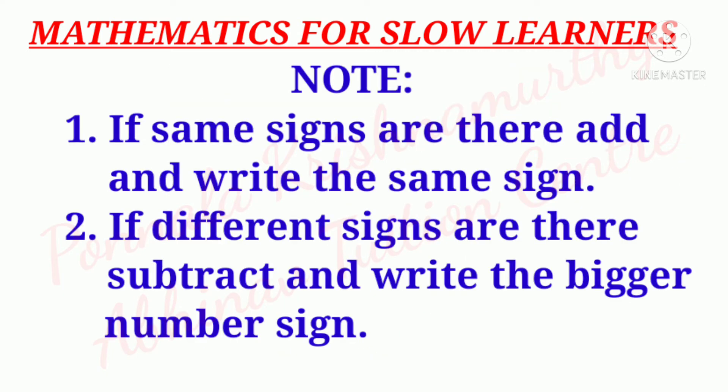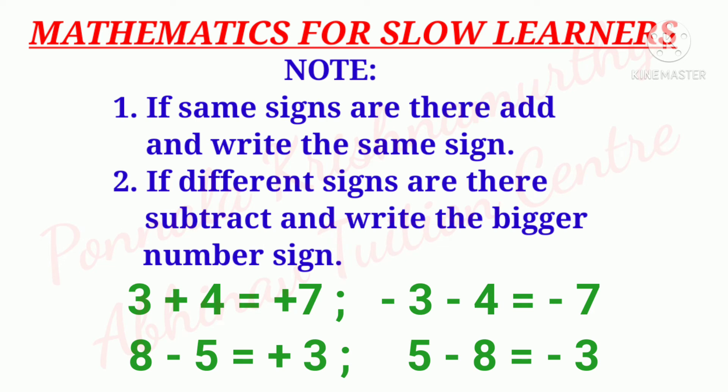Note: number one — if same signs are there, add and write the same sign. Number two — if different signs are there, subtract and write the bigger number's sign. Examples: 3 plus 4 is equal to plus 7. Minus 3 minus 4 is equal to minus 7. 8 minus 5 is equal to plus 3. 5 minus 8 is equal to minus 3.